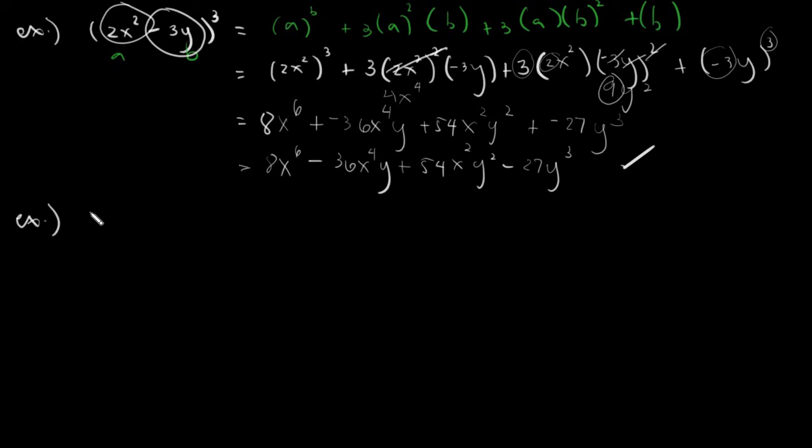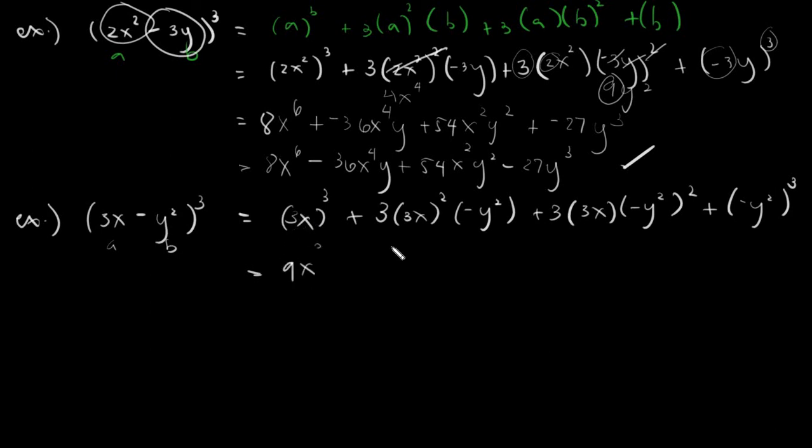Let's have our final given being 3X minus Y squared cubed. I will not write the formula, the structure further again. Let's just substitute straight A and B. This would be 3X cubed, plus it's always plus, 3 times 3X squared times negative Y squared, plus 3 times 3X times negative Y squared squared, and finally negative Y squared cubed. We have this given already.